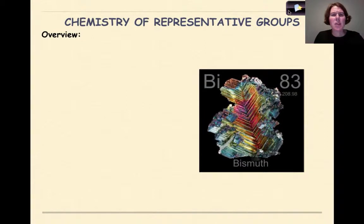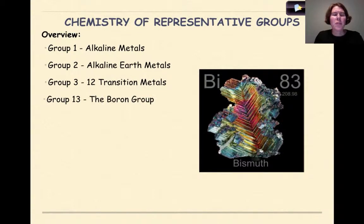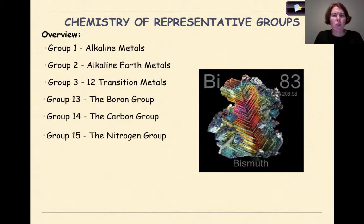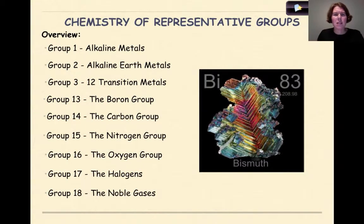Specifically, we're going to be looking at group 1, which is the alkali metals; group 2, which is the alkaline earth metals; groups 3 through 12, which represent our transition metals; group 13, the boron group; group 14, the carbon group; group 15, the nitrogen group; group 16, the oxygen group; group 17, more commonly known as the halogens; and finally, group 18, the noble gases.